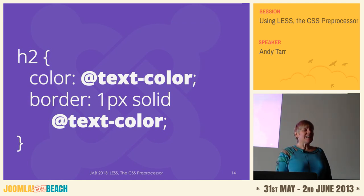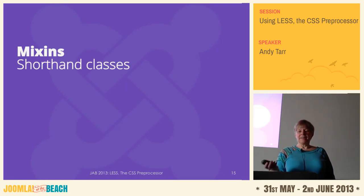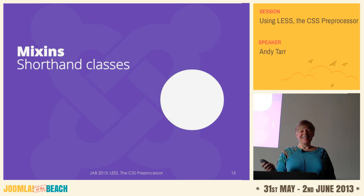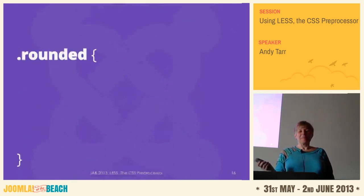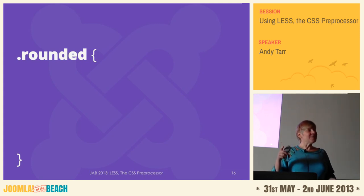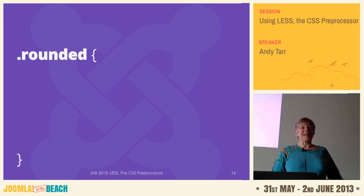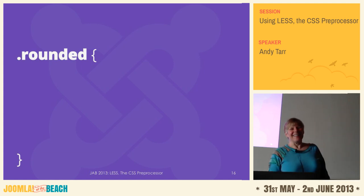Another thing LESS has is mixins. You can think of these as shortcuts. They look just like classes with a dot in front. We don't need to do this quite as much anymore for two reasons: the browsers have much better support for rounded corners, which is what I'm about to show you. And also, rounded corners are on their way out now. Now that we can do drop shadows, rounded corners, and gradients, everybody's going flat, square, and solid.